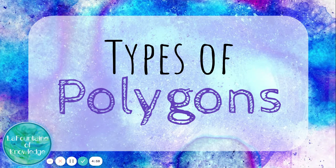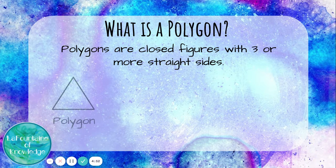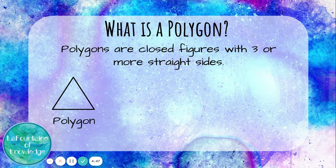Types of polygons. Polygons are closed figures with three or more straight sides. This shape is a polygon because it's a closed figure with three straight sides.